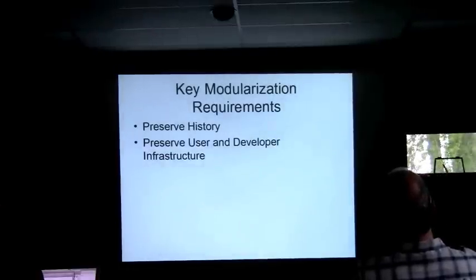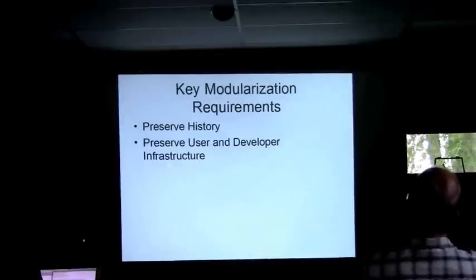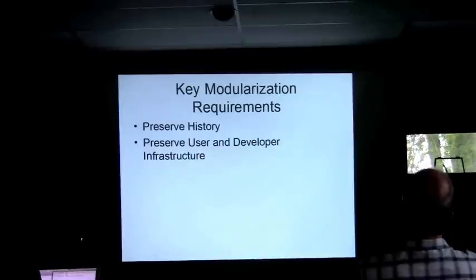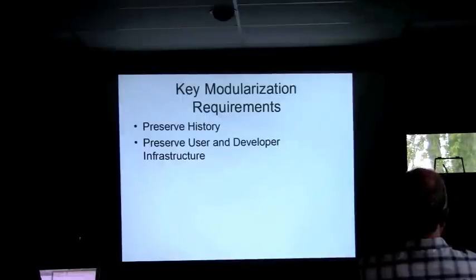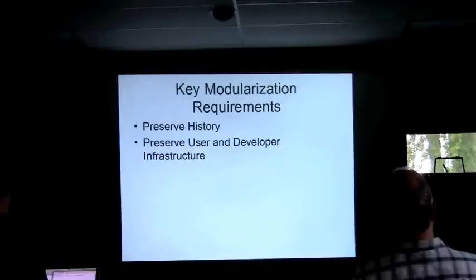There are a couple of key requirements that we'd be miserable without. One is preserving history — our history embodied in Subversion is very important, and that's what John has been working on. He won't call it done until it's bit-perfect: no bit that was in any version will be missing from the Git history. The second requirement is to preserve the user and developer infrastructure — both developers and users have immense investments in build setups using various IDEs, make, CMake, and many other tools. We don't want to break all of that.